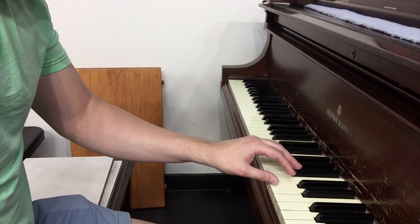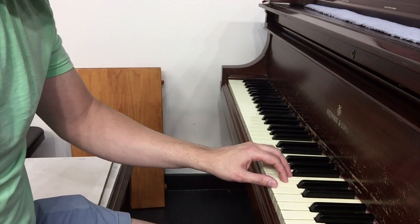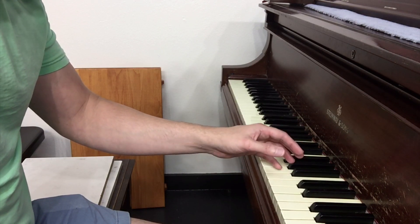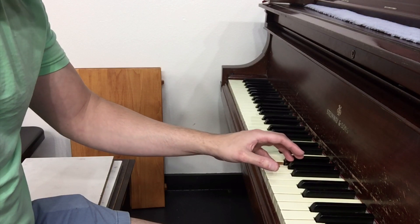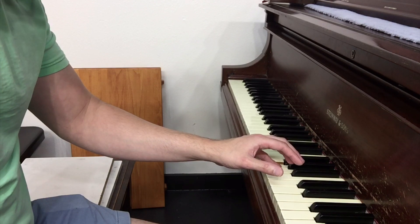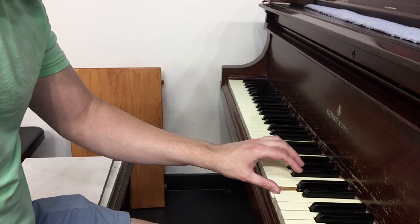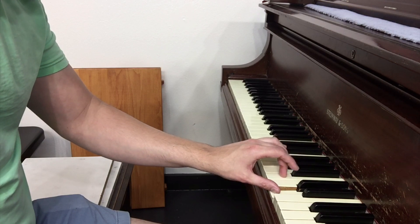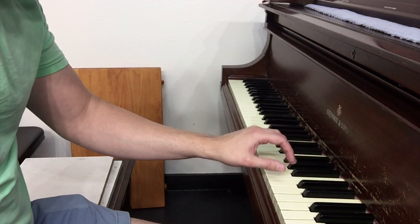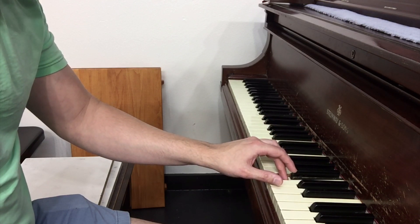Now the other big mistake is that people don't understand the exact motions involved in an Alberti bass. So I want to break these down as best I can for you. You actually start with a forearm rotation, or sometimes called a wrist rotation, from the bottom note to the top note. And then there's a movement more from the finger in the middle, like this. You see? And then a rotation back.